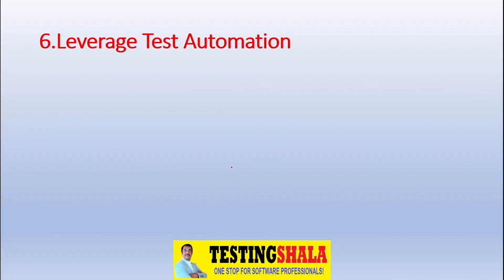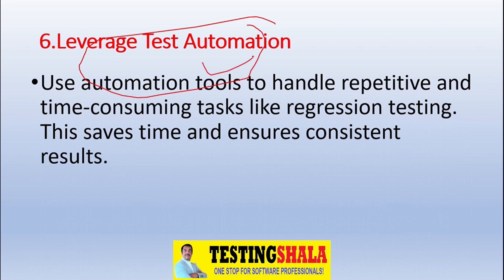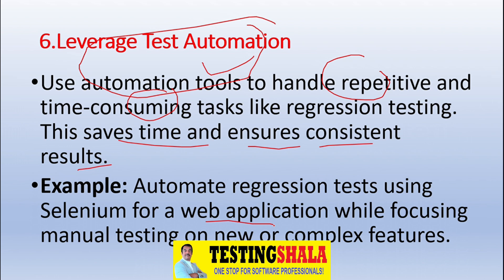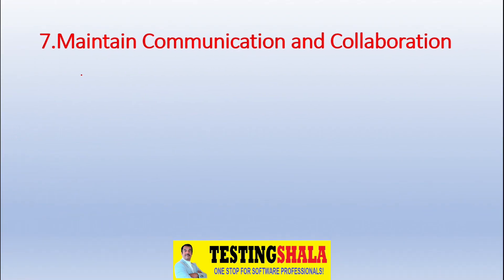The sixth method is leveraging test automation — not just depending on manual testing. We should choose the right tools to handle repetitive or time-consuming tasks, saving time and ensuring consistent results. For example, automating regression testing using Selenium for web applications while focusing manual testing on new or complex features. This balance between automation and manual testing helps deliver things more quickly.